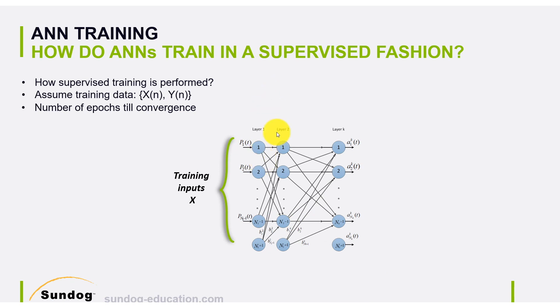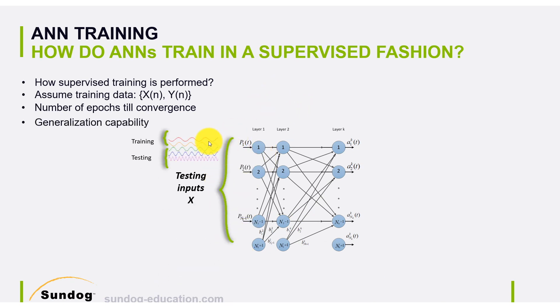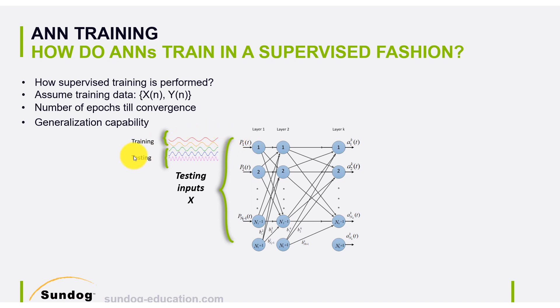After training, we replace the training data with the testing data set. For example, if we're trying to classify different sine waves — where the shape is the same but the frequency is different — the network can still generalize and predict that this signal is a sine wave using testing data that the network hasn't seen before. That's the power of an artificial neural network: we can show it different images of a car during training, and then show it a completely new image from the internet that it hasn't seen, and it can classify it correctly.